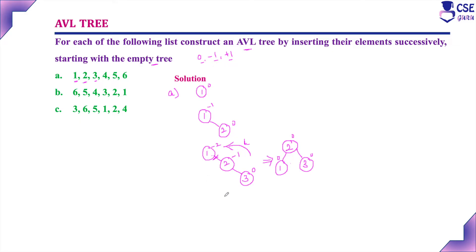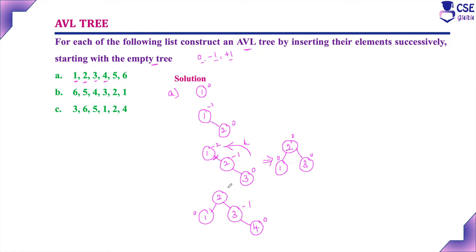Next, for this subtree, insert element 4. Here 2's left subtree is 1 and right subtree is 3. Since 4 is greater than 2, go to its right subtree. Since 4 is greater than 3, insert it as a right child. Now check the balance factor: for the leaf node it is 0, for 3 it is minus 1, and for root node 2 it is 1 minus 2, which is minus 1. Now it is balanced.